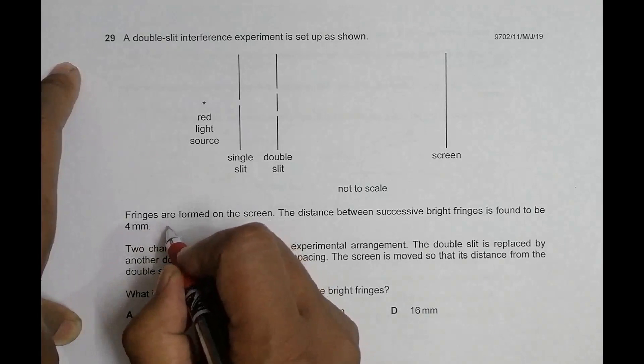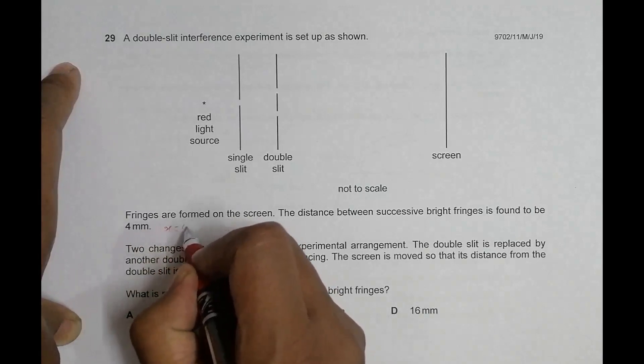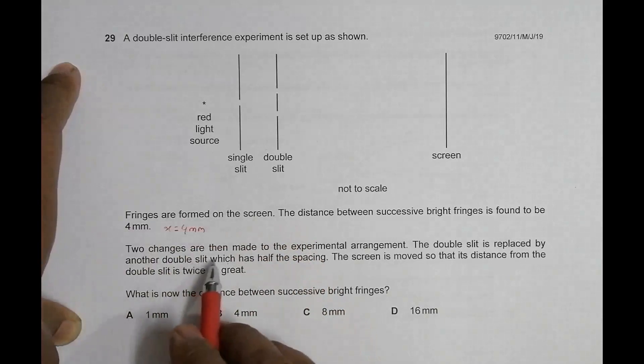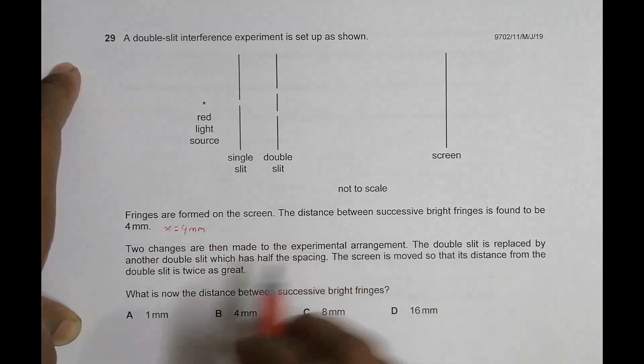So, distance between successive bright fringes, or maybe, that means we have the term for this is x is equal to 4 millimeters. Two changes are then made to the experimental arrangement.